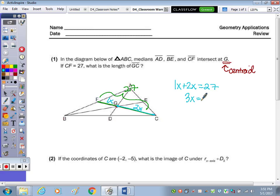We get 3x equals 27, divided by 3, and x is 9. To find the length of GC, this segment here, we would do 2 times 9, which is 18. So length GC is 18.